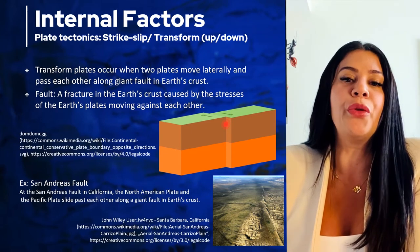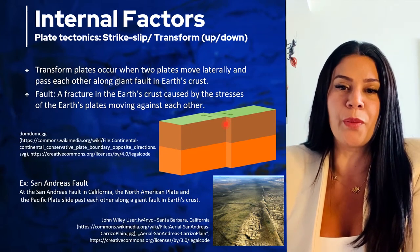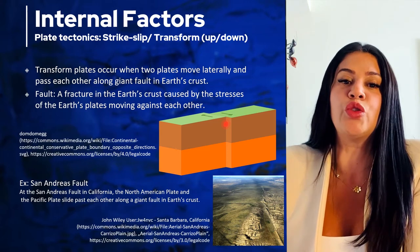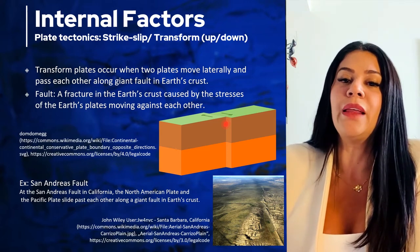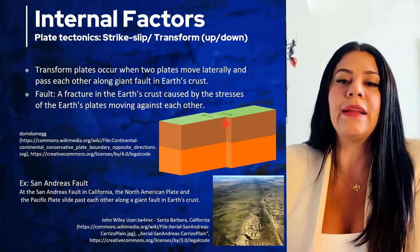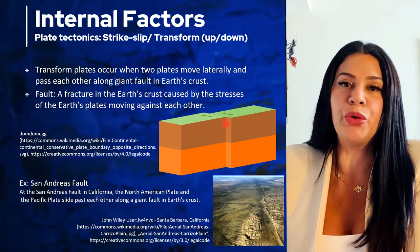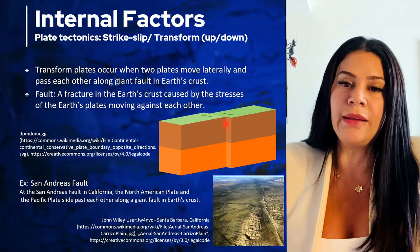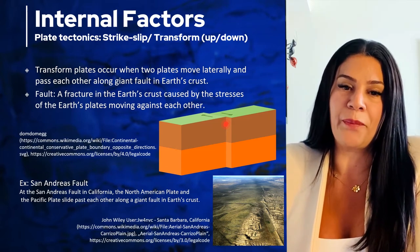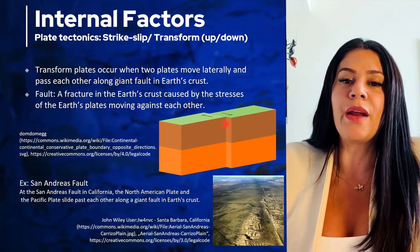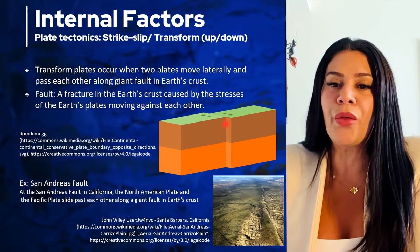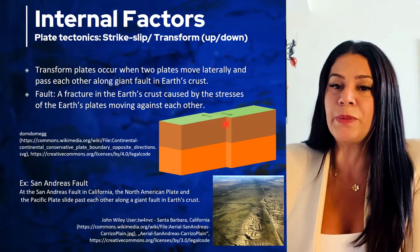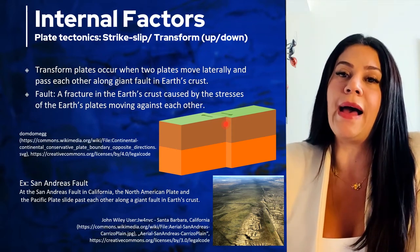Now we'll talk about the third type of plate boundary: transform plates. Because of the huge pressure on the earth's crust, the crust sometimes breaks, and these cracks are called faults. This is where earthquakes most commonly occur. The most famous fault is the San Andreas Fault in California, United States. It is a transform plate boundary where the Pacific Plate is moving north and the North American Plate is moving south. Whenever these plates slip, California has an earthquake.